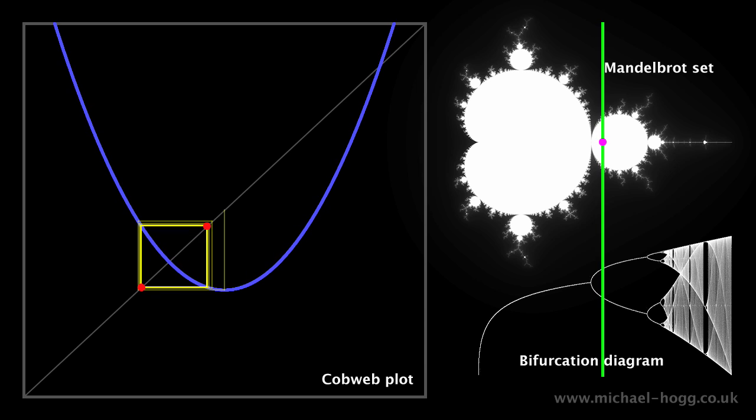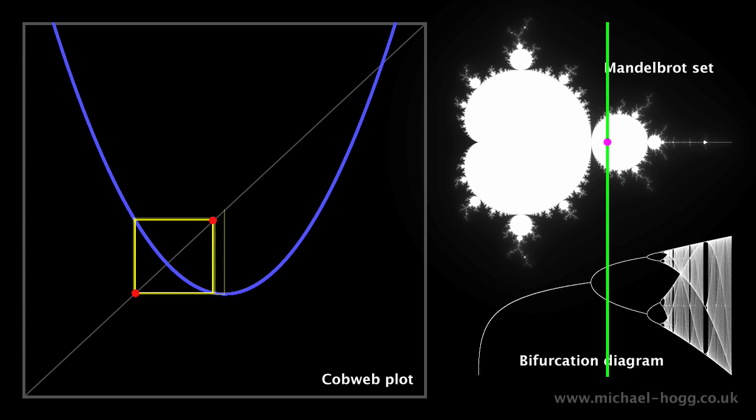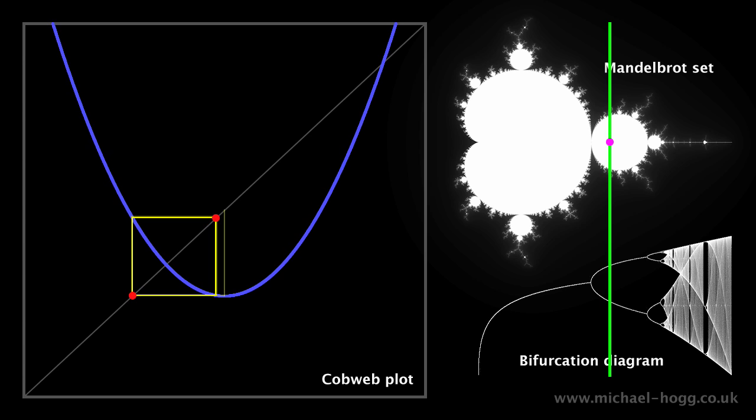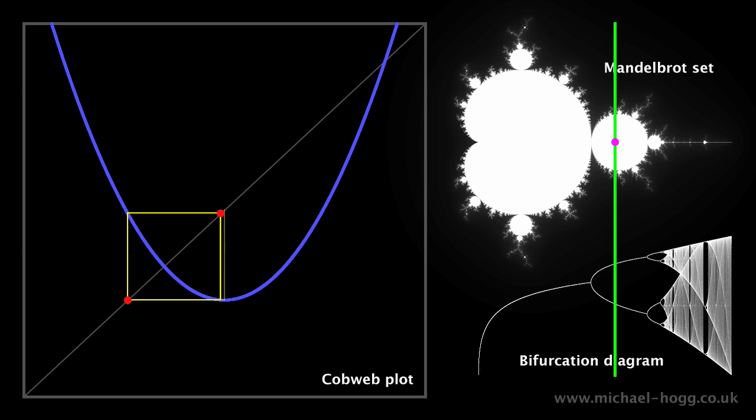In the bottom right corner is a graph known as a bifurcation diagram, which gives you an overview of what's happening in the cobweb plot, and the green line indicates the current state.